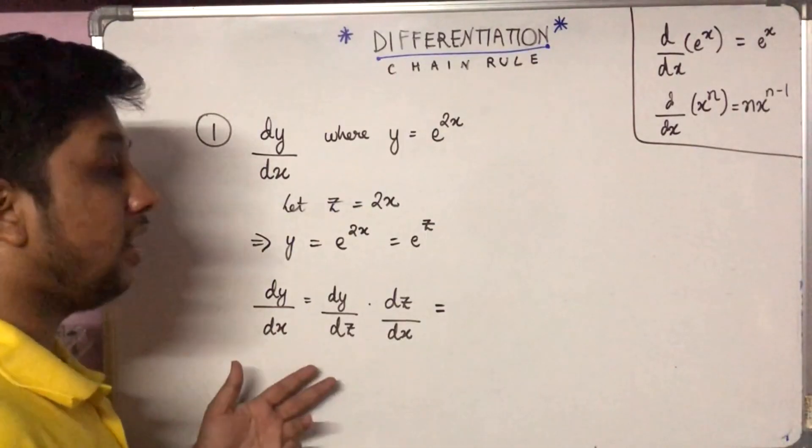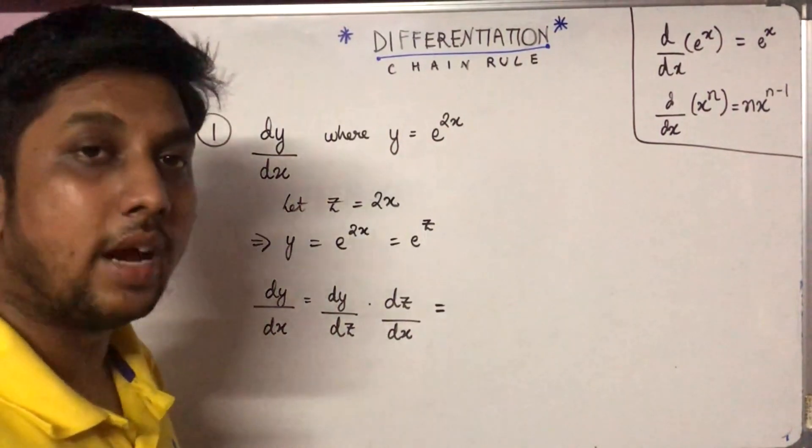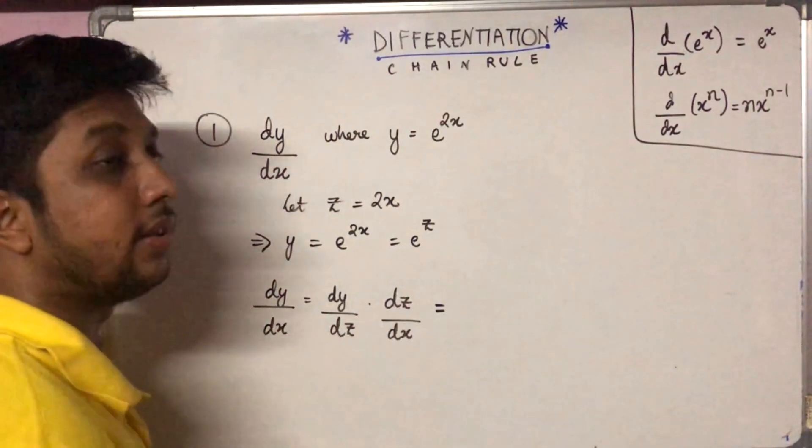So we have dy by dx equal to dy by dz into dz by dx. We can write it this way because we need dy by dx, so we can multiply and divide with a dz.